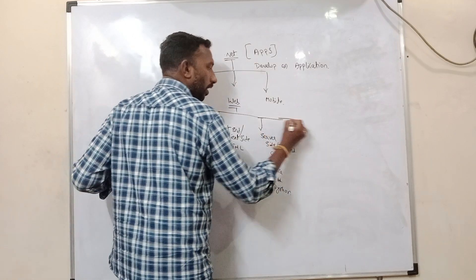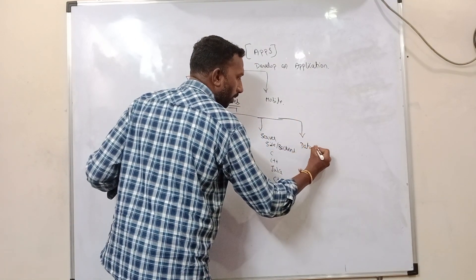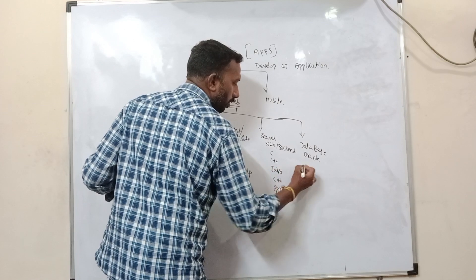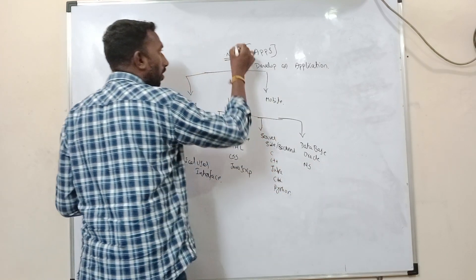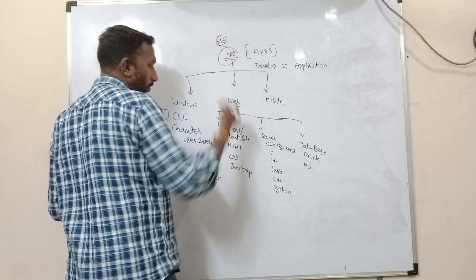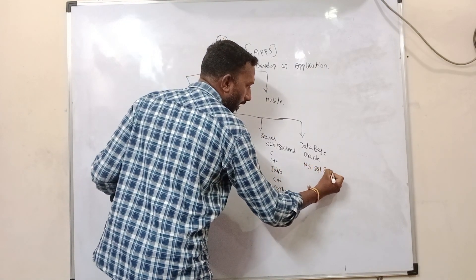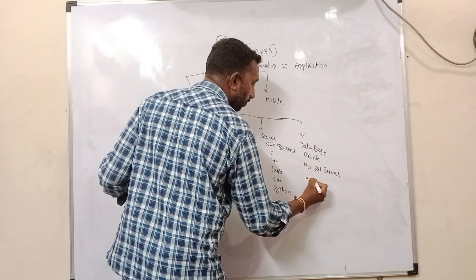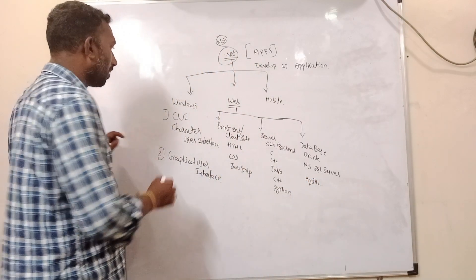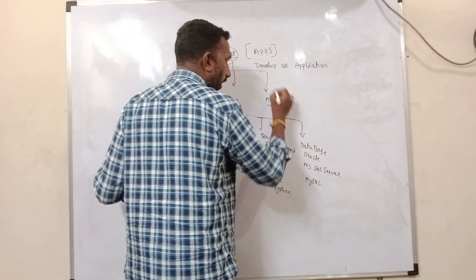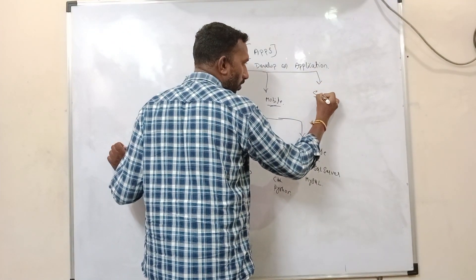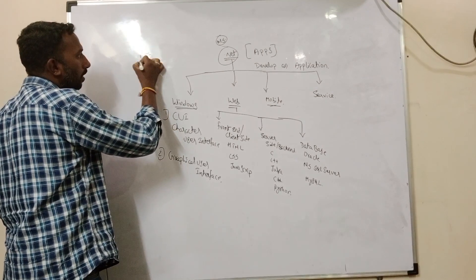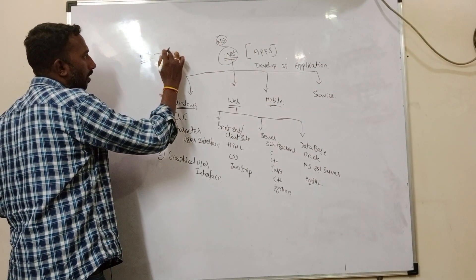On the server-side backend, we have programming languages like C, C++, Java, C#, ASP.NET, and Python. We use databases to communicate with them — such as Oracle for Java, and Microsoft SQL Server for C# and .NET, since .NET is a Microsoft product. For Python, we use MySQL. Whether it's a Windows, web, mobile application, or web service, we use C# as our server-side programming language.